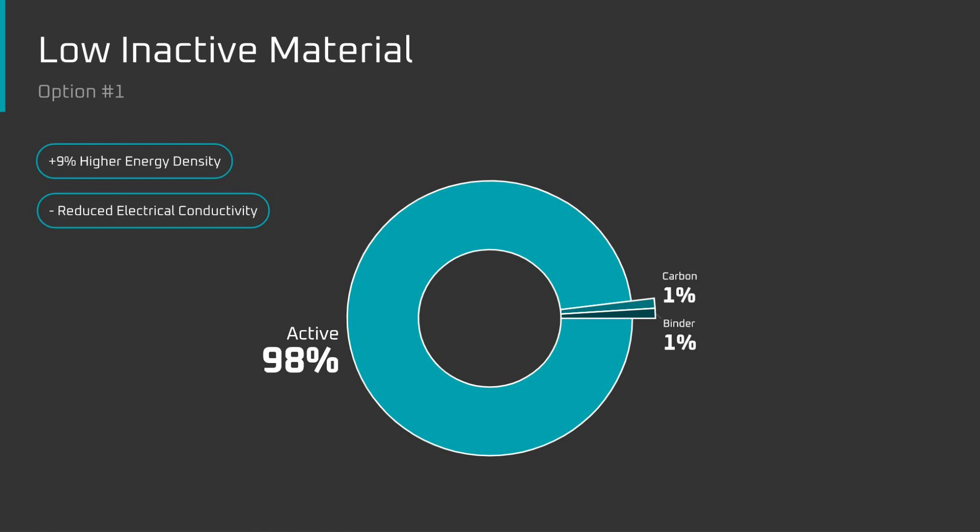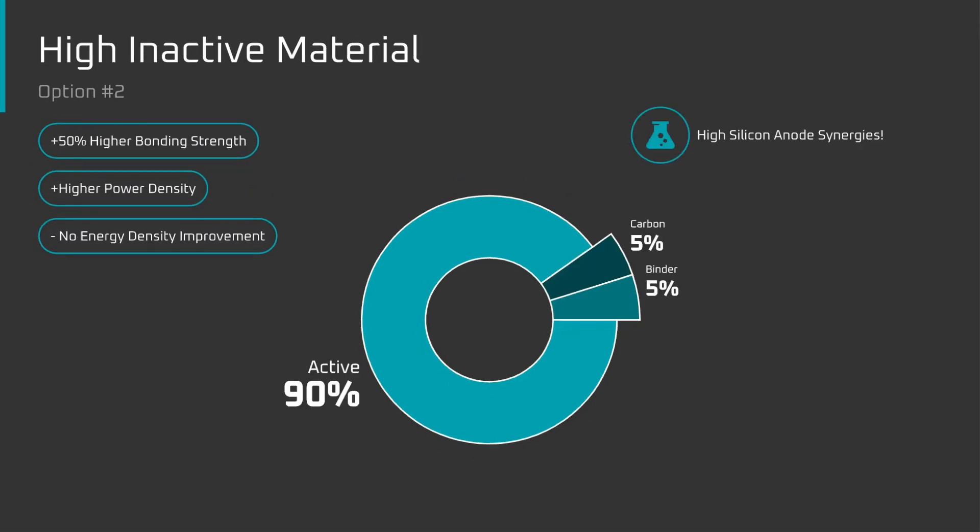However, with only 1% conductive carbon powder, the electrical conductivity would decrease, resulting in higher resistance and heat generation. The second option is to keep the ratios the same, which would deliver a robust and highly conductive electrode with no change to energy density. This electrode would have 50% higher bonding strength and might be well suited to something like a high loaded silicon anode that requires strong cohesion and adhesion to cope with the 400% expansion rate of the silicon.